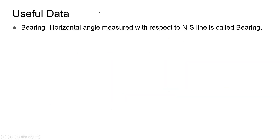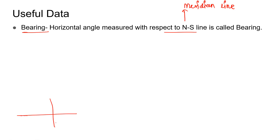In compass survey, the important term we use is bearing. Bearing is the horizontal angle measured with respect to the north-south line, also termed as the meridian line. Drawing a figure: this is east, west, north, and south. If we have a point P here, we measure angle theta P with respect to the north or south line, and this angle will be the bearing of point P.